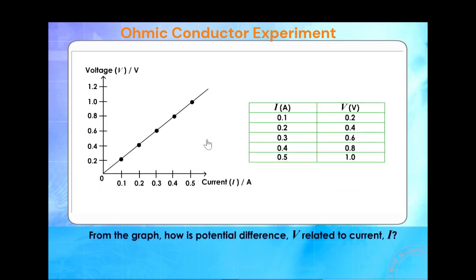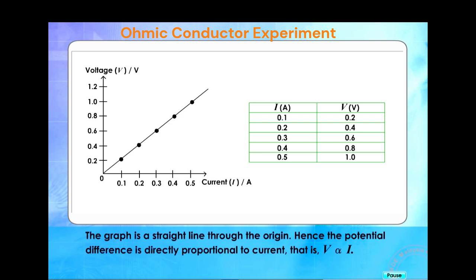From the graph, how is potential difference V related to current I? The graph is a straight line through the origin, hence the potential difference is directly proportional to current, that is V is directly proportional to I.